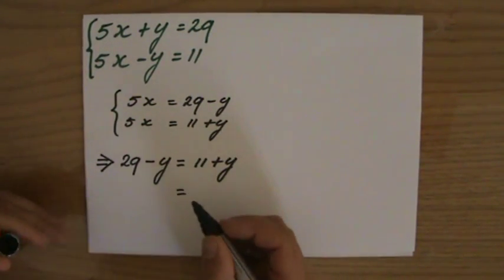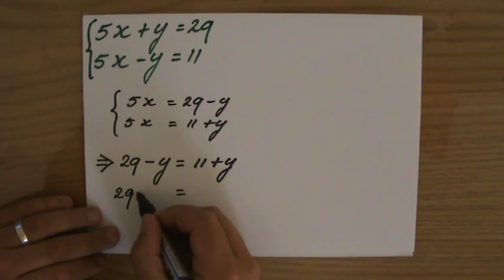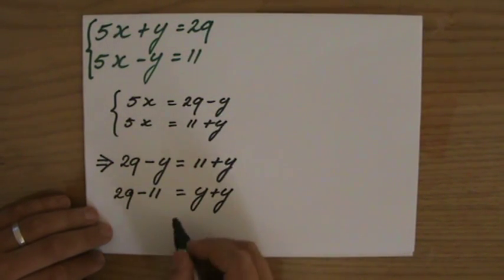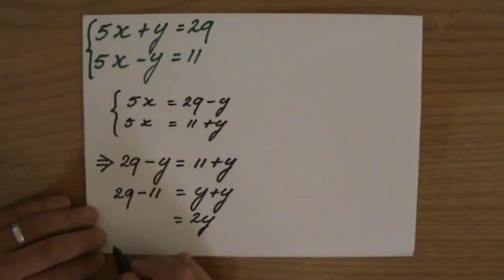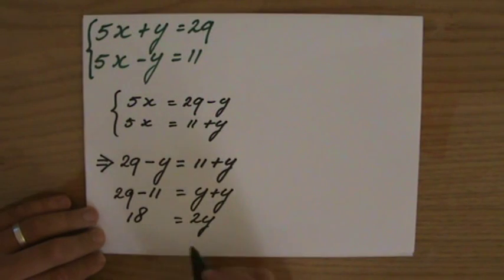So I'm going to write down 29 minus 11 equals y plus y. I'm rearranging the formula. 2y equals what is that? 29 minus 11. That is 18. So y equals 9.